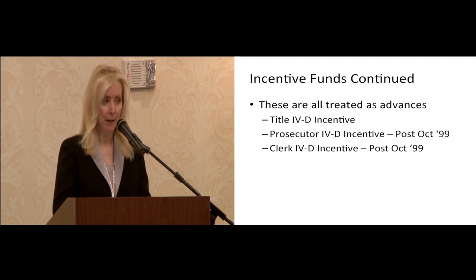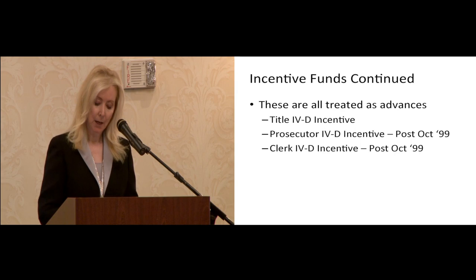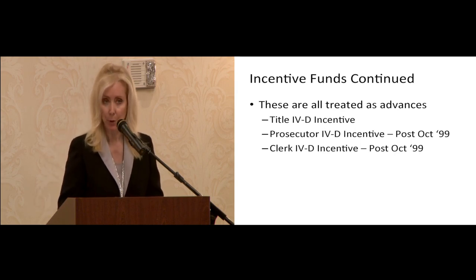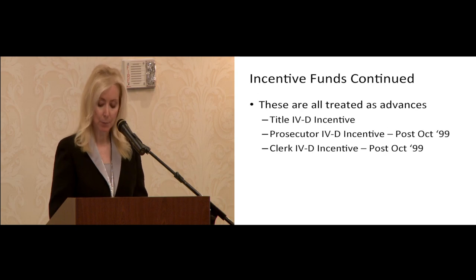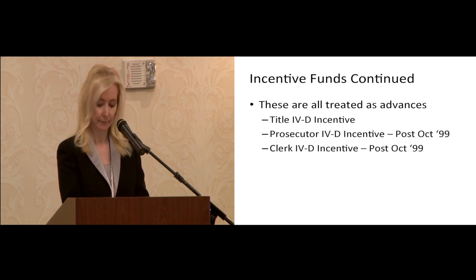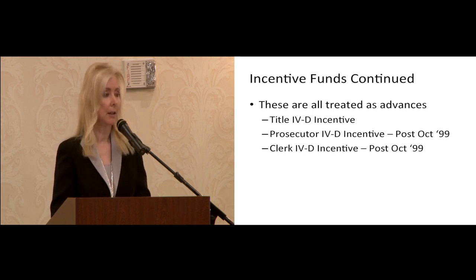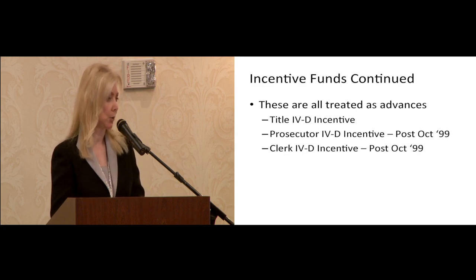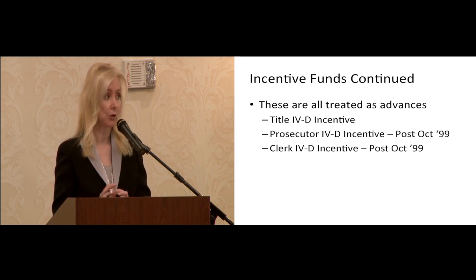The other three incentive funds are Title IV-D Incentive, Prosecutor Title IV-D Incentive, and Clerk Title IV-D Incentive — the ones we're all very familiar with. These three funds are advances. You will input your disbursements and your receipts, then check the box for advance. This way, the disbursement activity will show as the federal award expenditure on your CEPA report. If you just remember which ones are advances and which ones are reimbursements, you'll get to a CEPA report that clearly reflects your expenditures for the year.